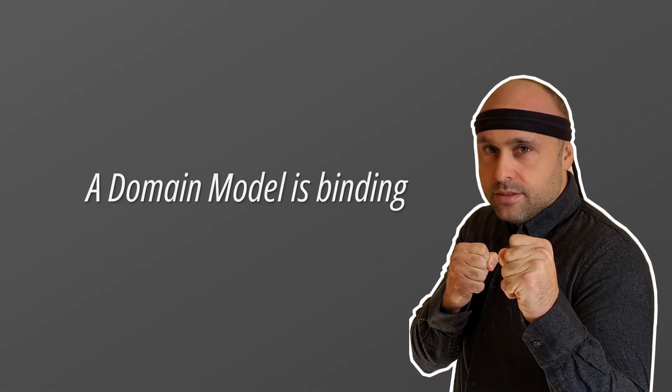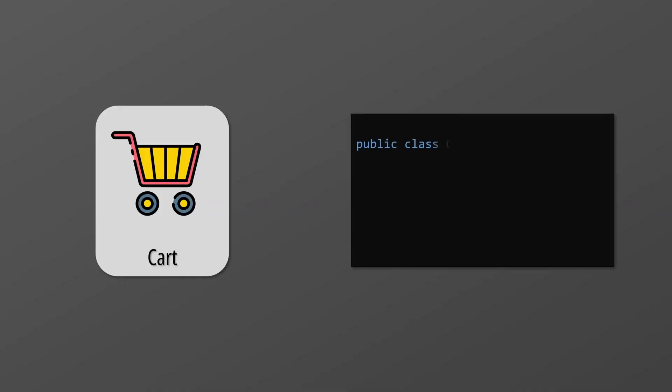For the domain model to be effective, it tends to be binding — it's like a contract. Everyone in the company must use its terminology. If we call something a cart, everyone must use that term. Shopping list, trolley, basket — they are not allowed, because they would just create confusion and misunderstandings. Most importantly, software developers need to abide by it and implement it as documented. Otherwise, the end result is a system that does not behave as intended.